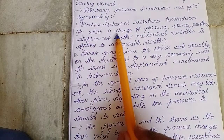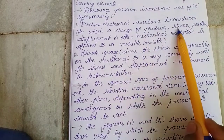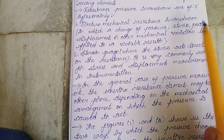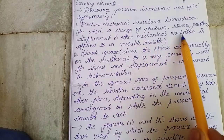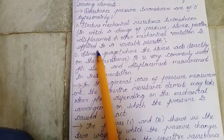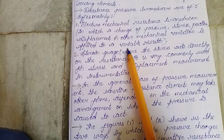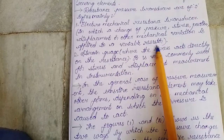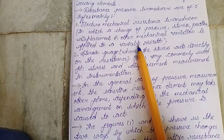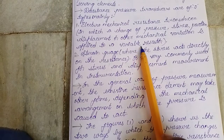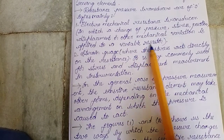In the electromechanical resistance transducer, a change in pressure, stress, position, displacement, or other mechanical variation is applied to a variable resistor. A variable resistor indicates that the resistance can be varied — it is not fixed at a value like 100 Ohms or 1K.